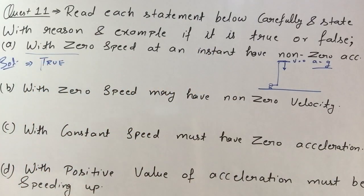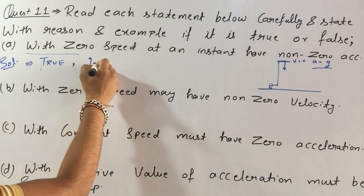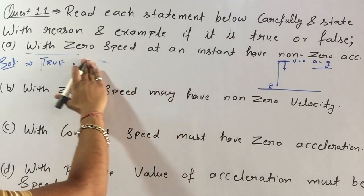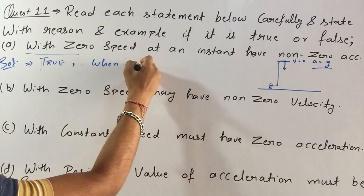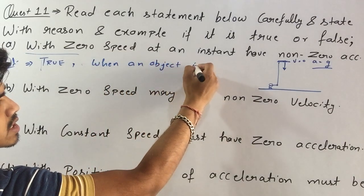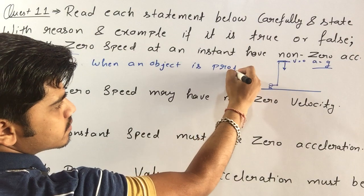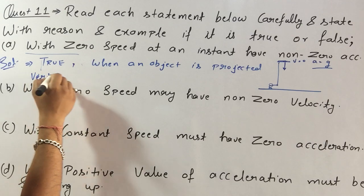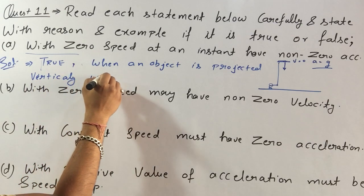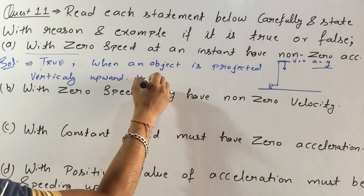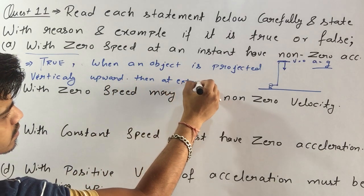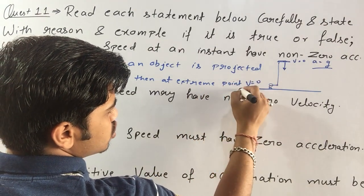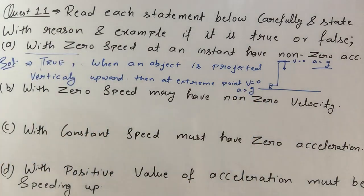We have to explain with an example. When an object is projected vertically upward, then at the extreme point v is equal to 0 and a is equal to plus g.